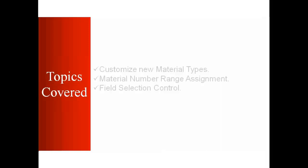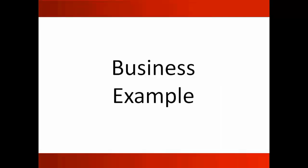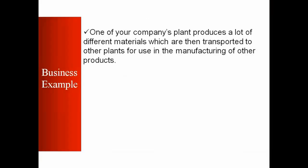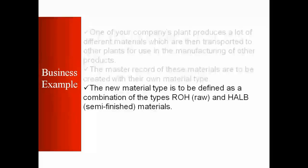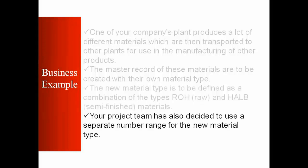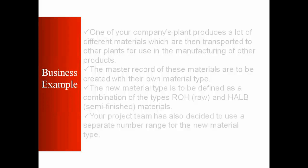First, we'll start with a business example. One of your company's plants produces a lot of different materials which are then transported to other plants for use in the manufacturing of other products. The master records of these materials are to be created with their own material type. The new material type is to be defined as a combination of raw material and semi-finished materials. Your project team has also decided to use a separate number range for the new material type. So in this topic we're going to learn how you can customize your own material types and what their attributes are.